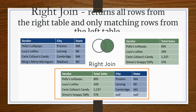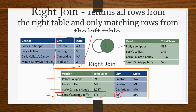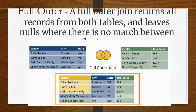In right join, all rows in the right table will be there and matching rows from the left table will be included. So Polly's Lollipop, Lucy's Lollies, Carlo Calazzo, and Snyman's Nappy Taffy — which is in the right table — all appear, but records not matched with the left table are replaced with null. In full outer join, all records from both tables appear, and null replaces any missing values.